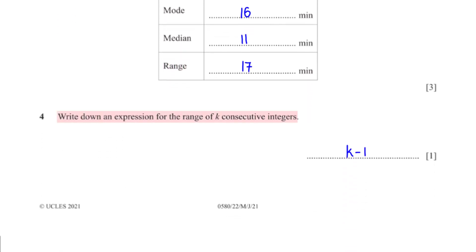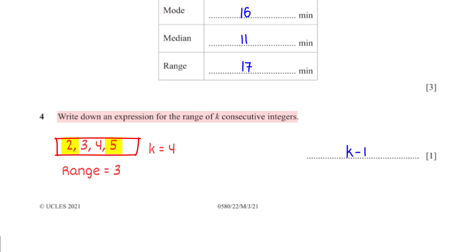Write down an expression for the range of k consecutive integers. If we have k consecutive integers, say 2, 3, 4, and 5, the range is the biggest integer minus the smallest: 5 minus 2 is 3. Since we picked four consecutive integers, the range is 1 less than 4, so if we have k consecutive integers the range will be k minus 1.